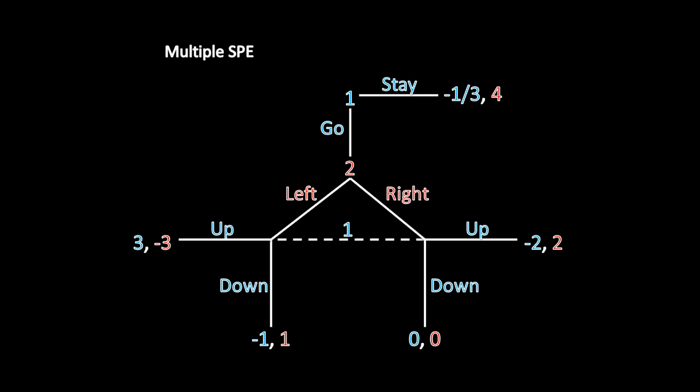Player 1 begins this game by choosing to stay or go, and if he chooses to go, then Player 2 then chooses left or right. And following that, we see something we've never encountered before. Player 1, when he makes this move, doesn't actually know whether Player 2 has chosen left or right. This dashed line here is indicative of that fact. His options are going to be to go up or down — we see up or down on either side — but when he makes this move, he can't actually observe whether Player 2 has gone left or right before.